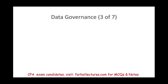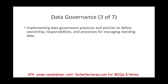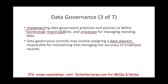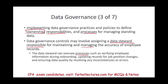Another form of control is data governance, which involves implementing policies to define ownership, responsibilities, and processes — essentially stewardship. Data governance can mean assigning a data steward responsible for maintaining and managing the accuracy of employee records. The steward oversees processes such as verifying employee information during onboarding — full name, address, social security, emergency contact — updating records for job position changes, and ensuring data quality by resolving inconsistencies or errors.